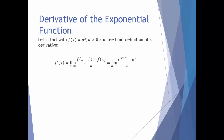We're going to use the limit definition specifically for f of x equals a to the x. When we find f of x plus h, that's a to the x plus h. f of x is a to the x. Then it's all over h. So this is the general derivative of the exponential function.